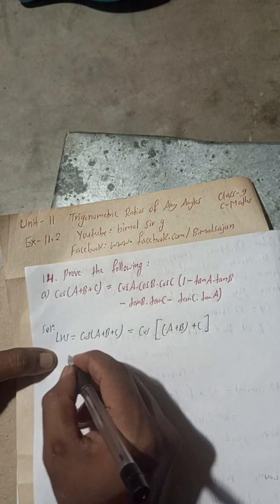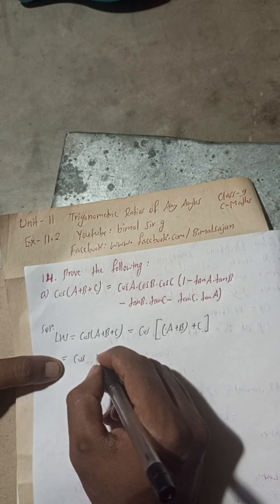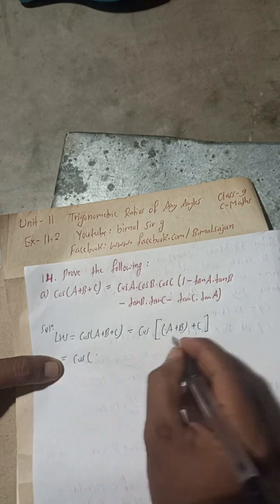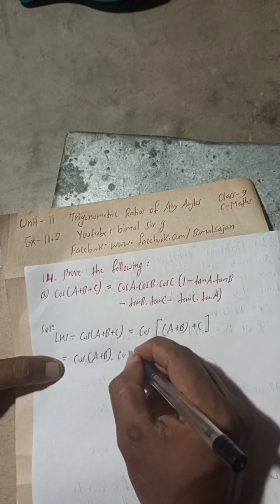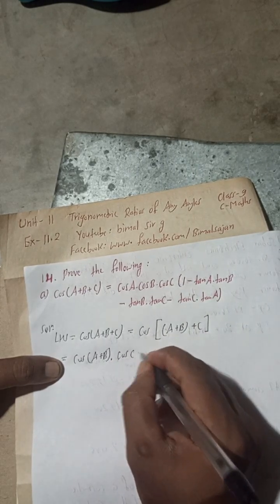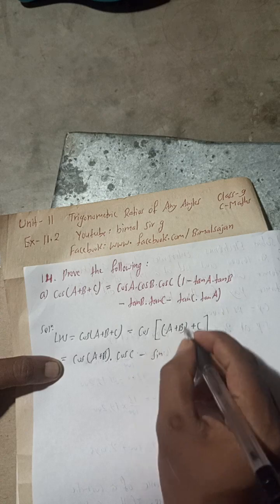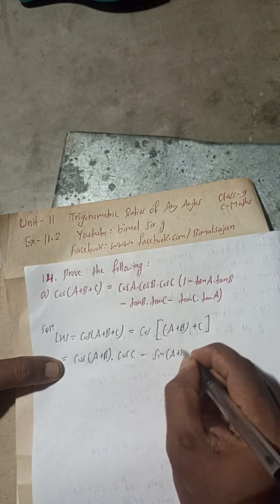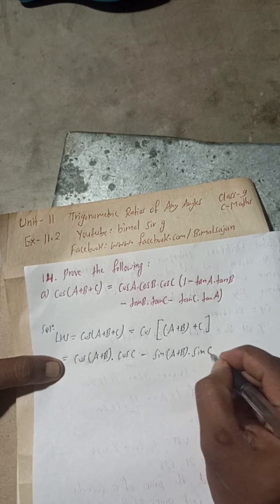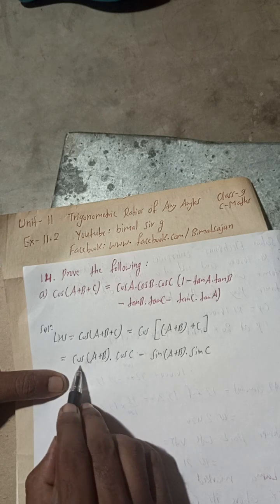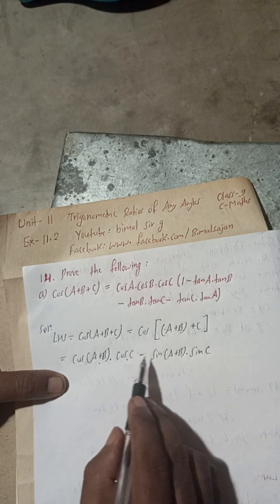Now we apply the formula cos(A + B) = cosA·cosB − sinA·sinB. So treating (A + B) as the first angle and C as the second, we expand: cos((A+B) + C) = cos(A+B)·cosC − sin(A+B)·sinC.